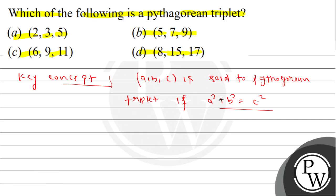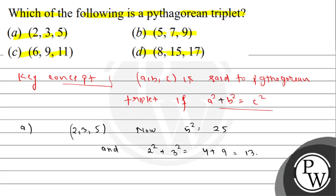Option A: the triplet is 2, 3, 5. How much is 5 squared? That is 25. And 2 squared plus 3 squared — how much is 4 plus 9? That is 13, which is not equal to 25. So this implies 2 squared plus 3 squared is not equal to 5 squared.